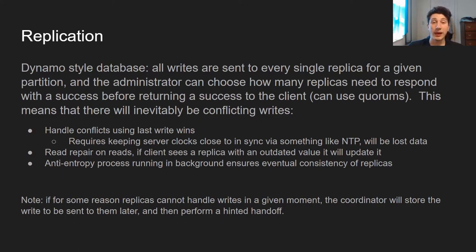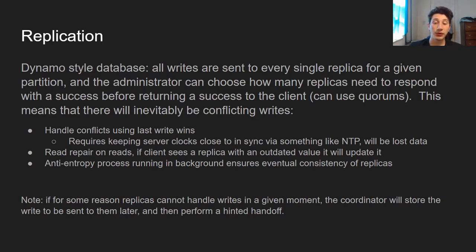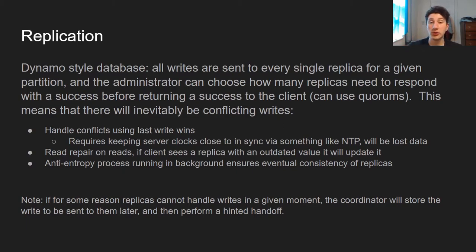Additionally, there is read repair on reads to keep data consistent. If two nodes hold different versions of a row based on timestamp and a client reads from both replicas, the client will perform read repair and give the replica with the outdated row the newer version. Cassandra also runs an anti-entropy process in the background where replicas calculate their differences in content and one replica helps update another to ensure the most up-to-date data — this is what really guarantees eventual consistency.